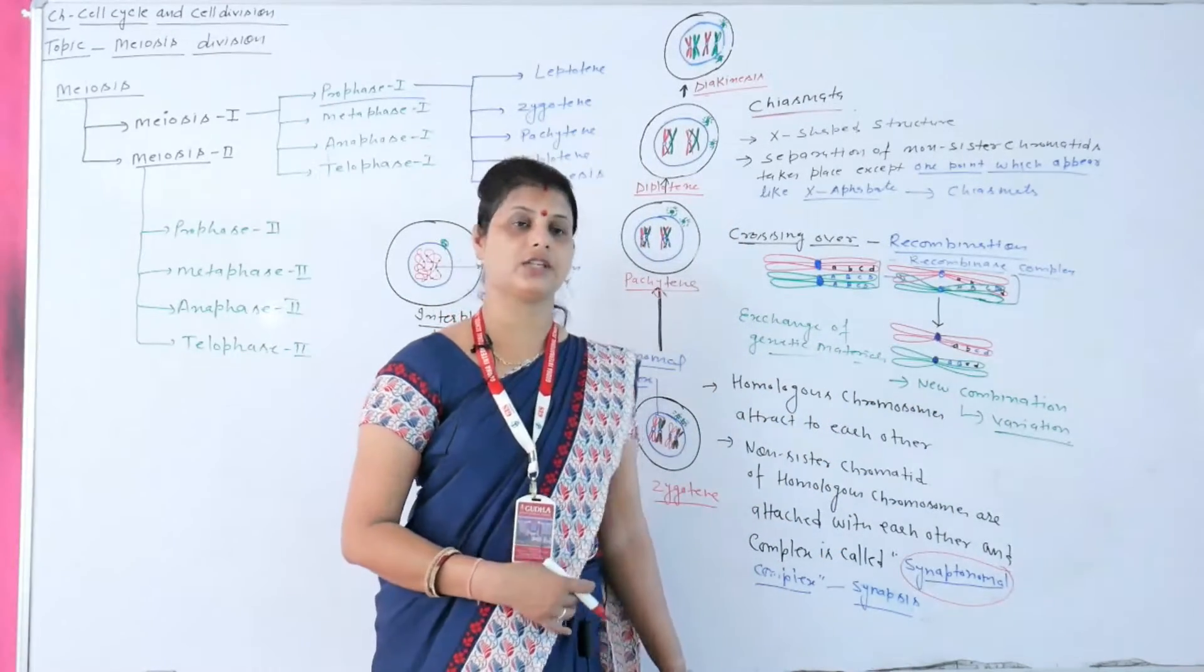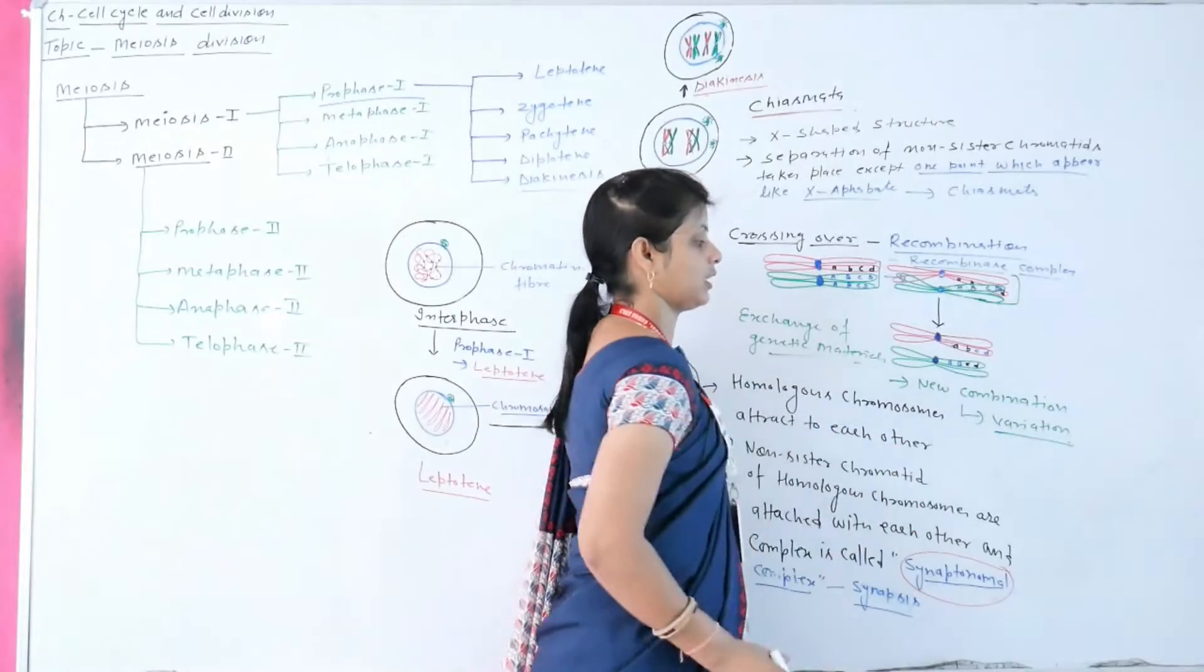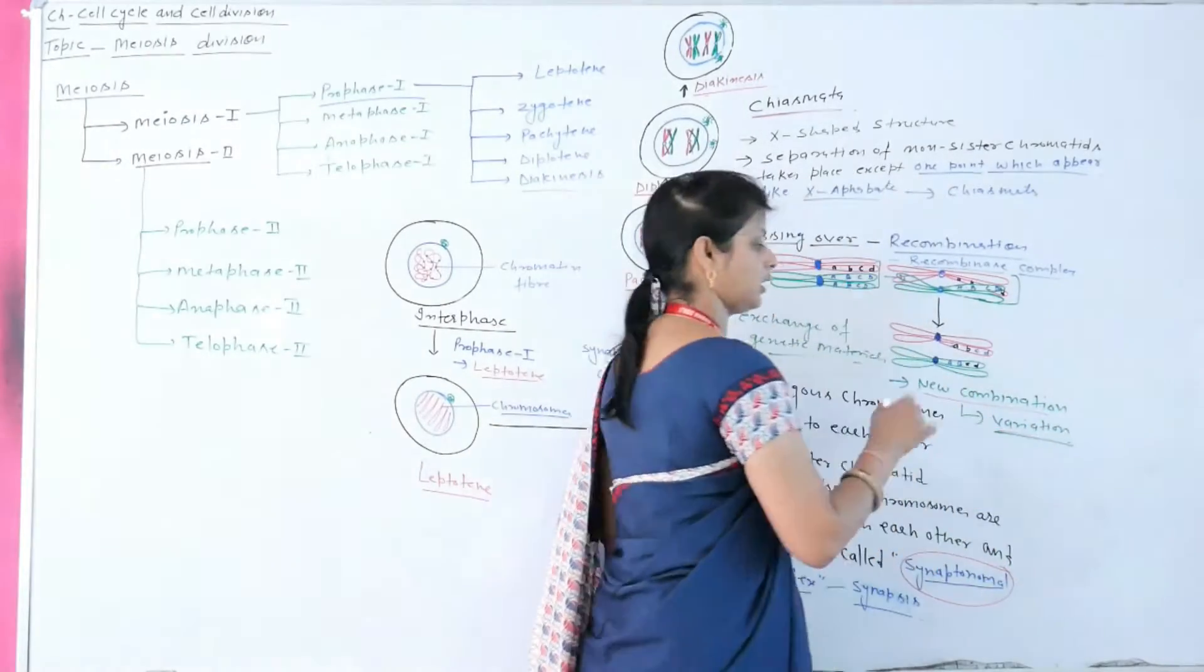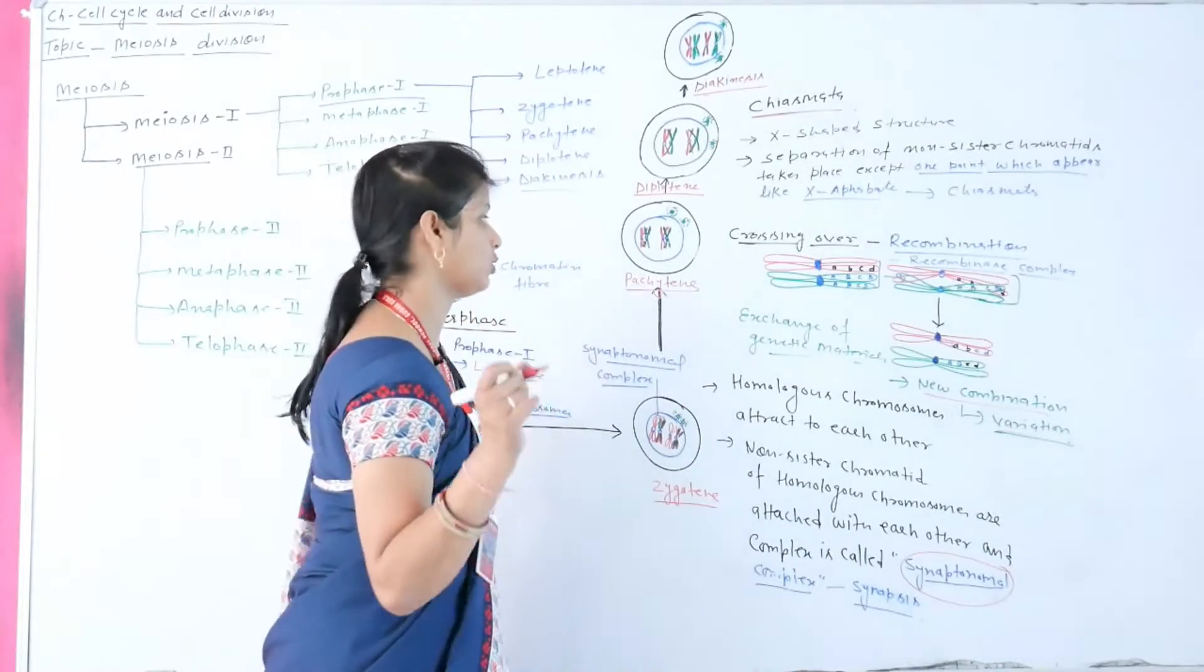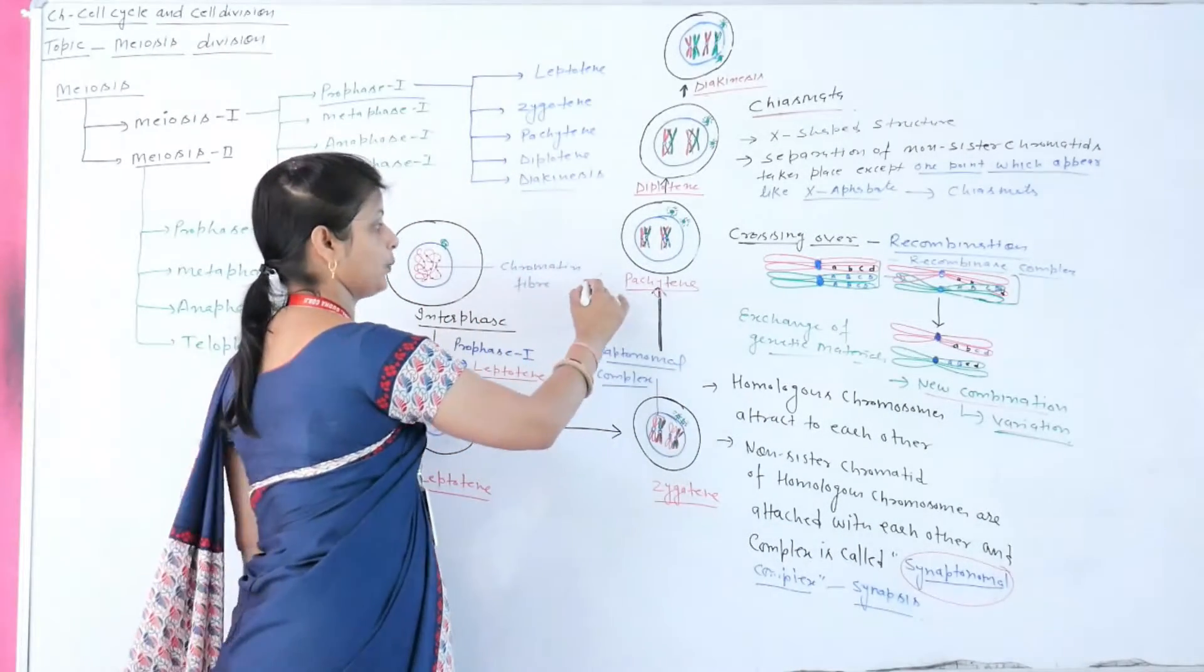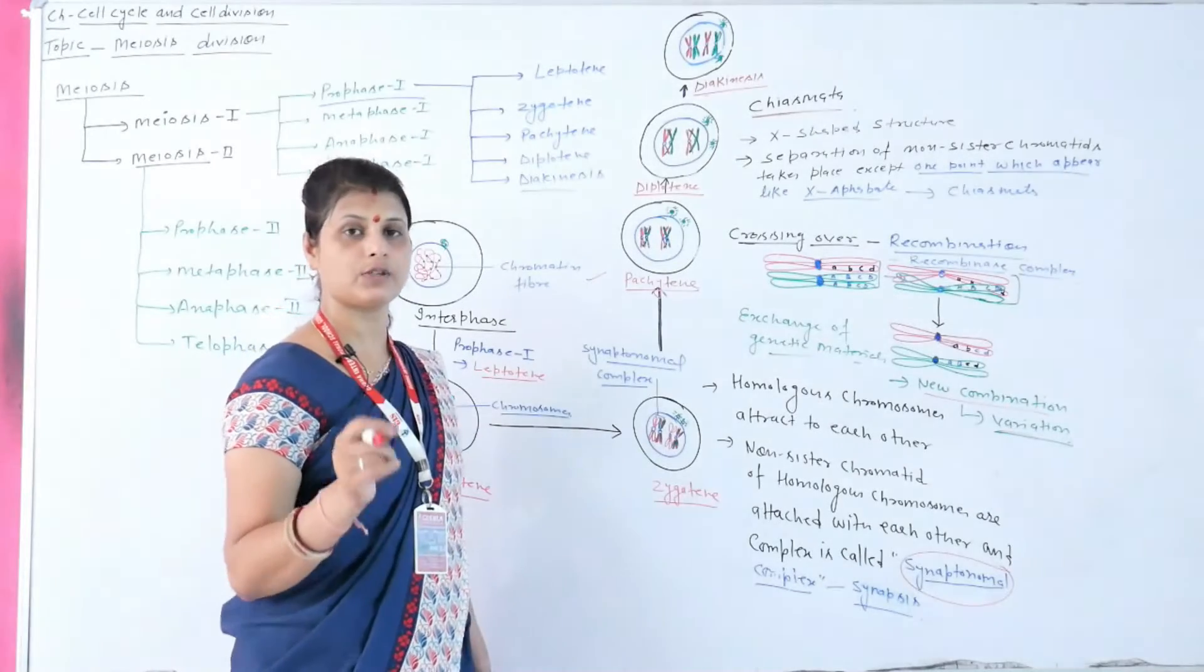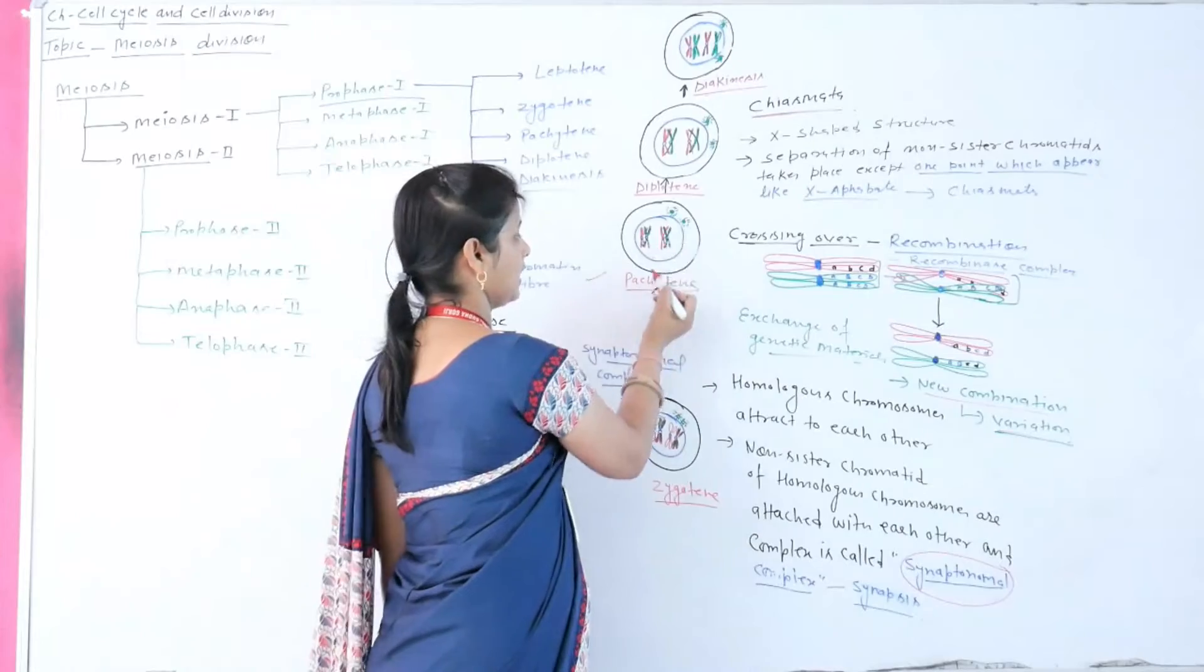This process is called recombination. Due to recombination, new combinations occur, and these new combinations cause variation. This is the main reason for variation in sexually reproducing organisms. The presence of pachytene sub-stage of prophase I leads to variation in sexually reproducing organisms during gamete formation.